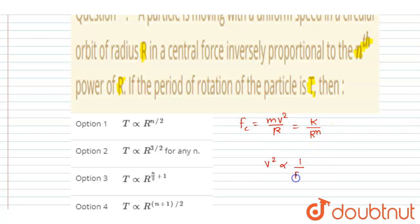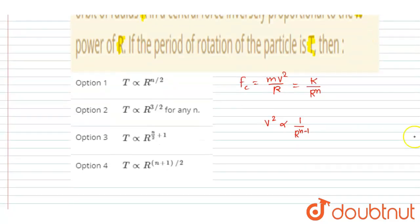So from here you can see the V is directly proportional to N minus 1 by 2, simple. So we got the velocity is inversely proportional to R to the power N minus 1 by 2. Now we wanted the time period, right?